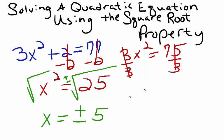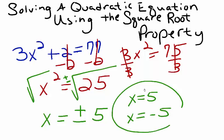So in other words, our solutions are x equals 5 and x equals negative 5. That's it for this example, and I hope you find it helpful.